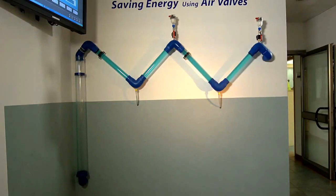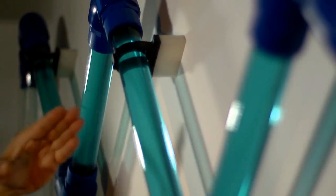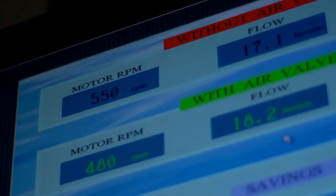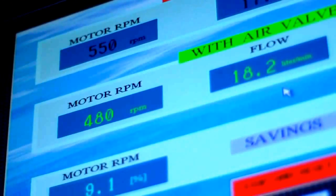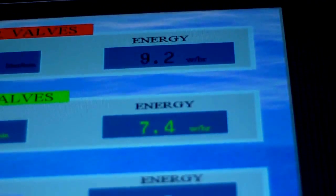After the flow stabilizes, the control screen shows that now in order to produce the same flow rate of 17.1 liters per minute, the pump motor will run at 480 RPM, which consumes energy at the rate of 7.4 watts per hour.